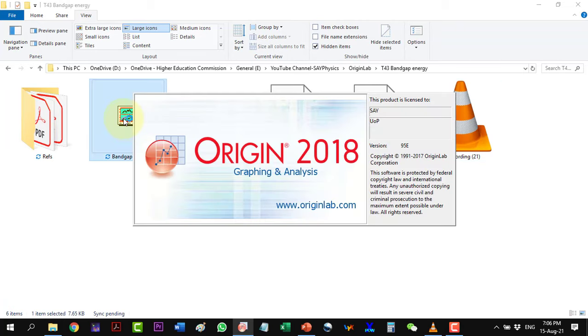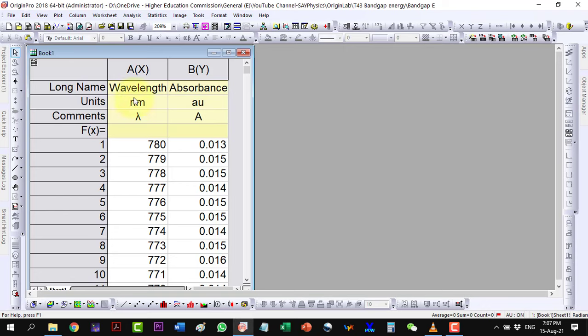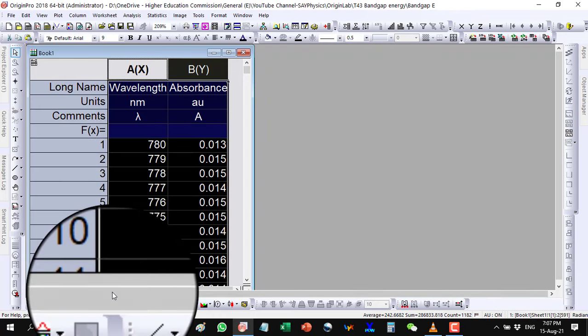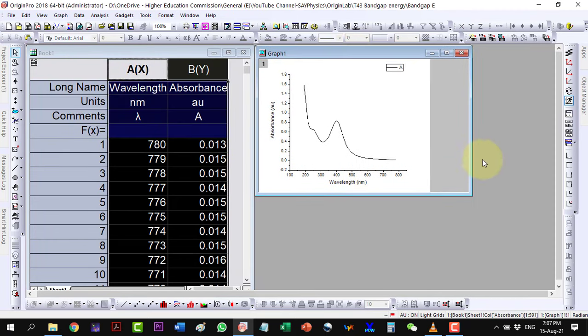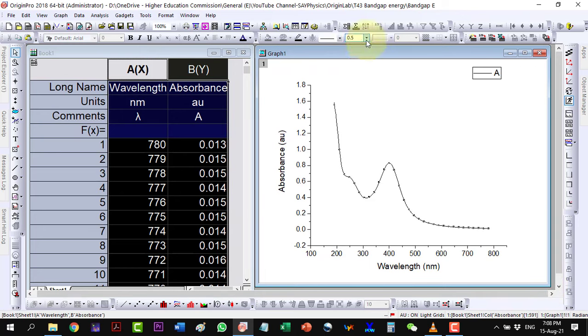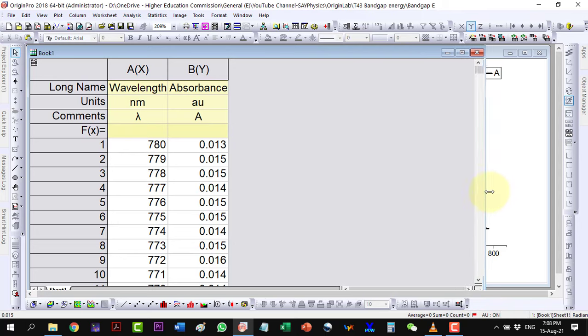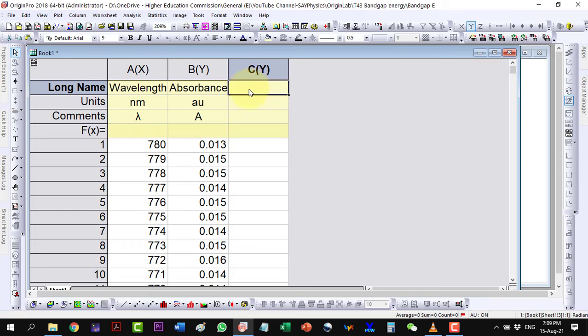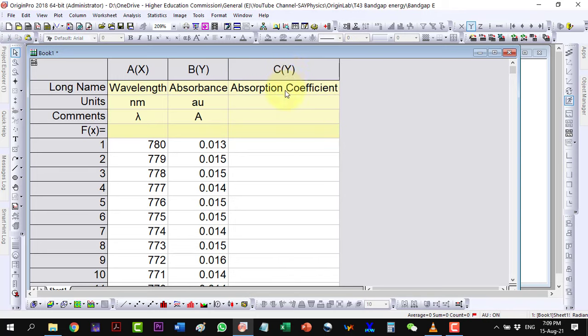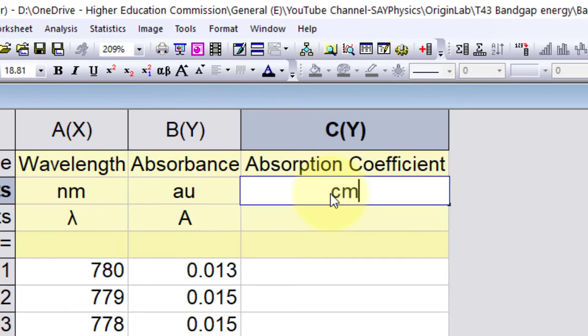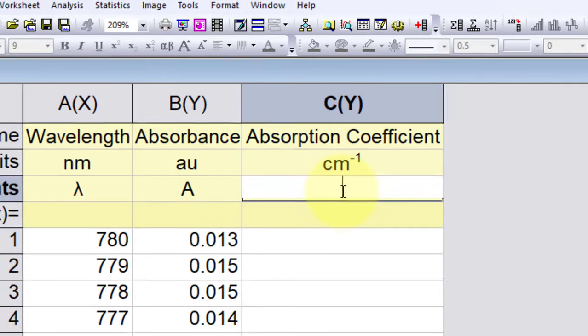Now, we will start with the UV-Vis data in Origin. The first column shows the wavelength in nanometers, while the second shows the absorbance. Let us plot the data. Here, we will first find the absorption coefficient alpha by adding an additional column.